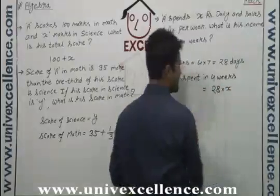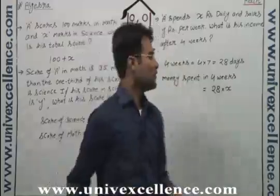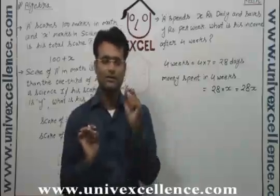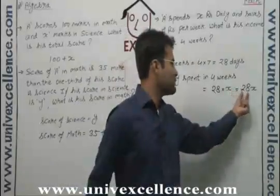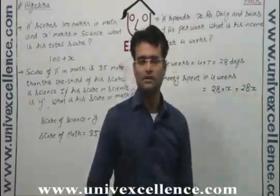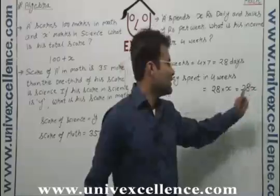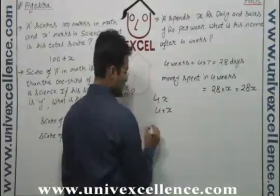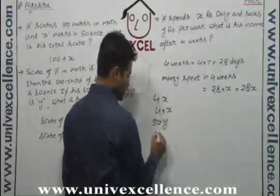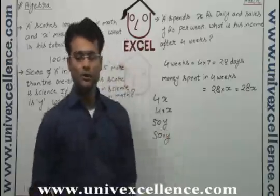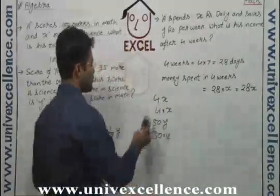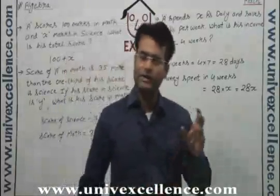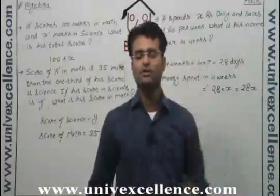So money spent in four weeks will be twenty-eight days into x rupees per day, that is twenty-eight x. Whenever there is no operation symbol between an arithmetic number and a literal, it means multiplication. If we say four x it means four into x; if we say fifty y it means fifty into y. So between a literal and an arithmetic number, there is always a multiplication sign.